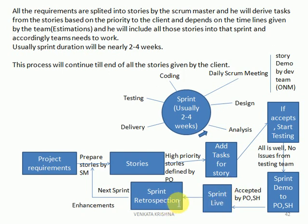After the sprint goes to production, there is a sprint retrospection meeting. In this meeting we discuss what went well and what went wrong in that sprint. Mistakes made in the current sprint should not be repeated in future sprints — it is essentially a lessons-learned session. After retrospection, the next sprint begins and the same process repeats: stories, tasks, story demo, testing, and so on.